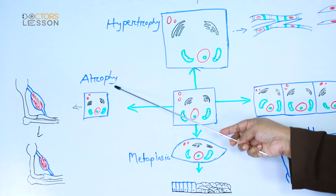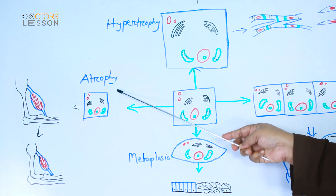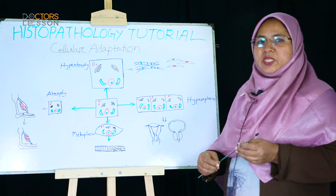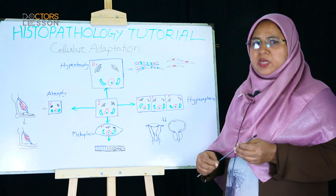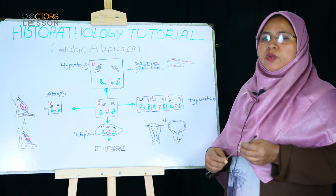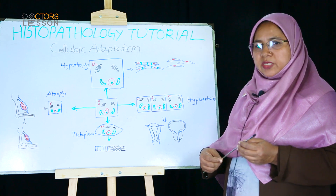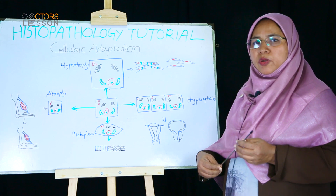The third adaptive change is atrophy. Atrophy refers to decrease in size of an organ or tissue due to decreased size and number of its constituent cells. Atrophy is divided into physiological and pathological types. The most common cause of physiological atrophy is decreased functional demand, as seen in the fetus where embryologic structures such as the notochord and thyroglossal duct become atrophied. Various factors are identified for pathological atrophy: decreased workload or prolonged disuse, loss of nerve supply, diminished blood supply, inadequate nutrition, and loss of hormonal stimulation.